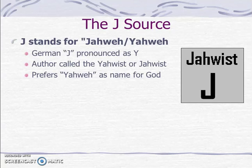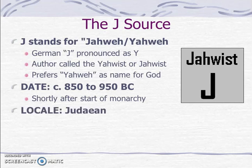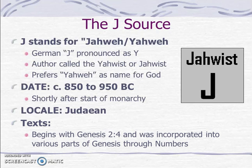J stands for Yahweh, German J pronounced Y. The author is called the Yahwist, the idea being that this author prefers the divine name Yahweh as his name for God. Wellhausen dated the Yahweh source to between 850 and 950 B.C., shortly after the start of the monarchy. He believed it was a Judean source — J is for Judah — and he thinks this source begins in Genesis 2:4 and was incorporated into various parts of Genesis through Numbers.